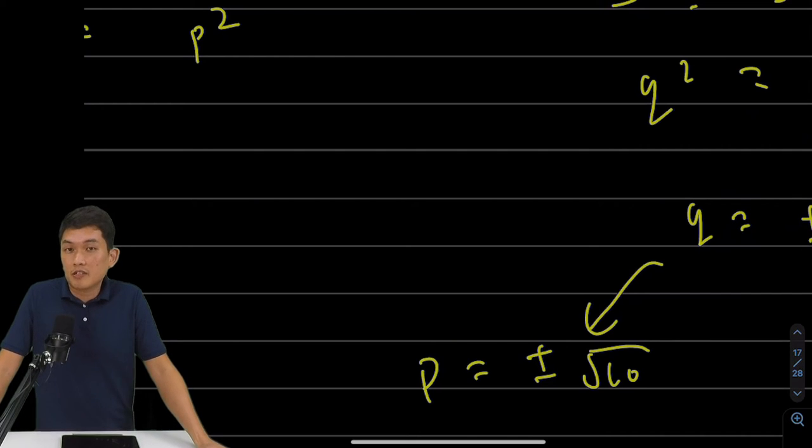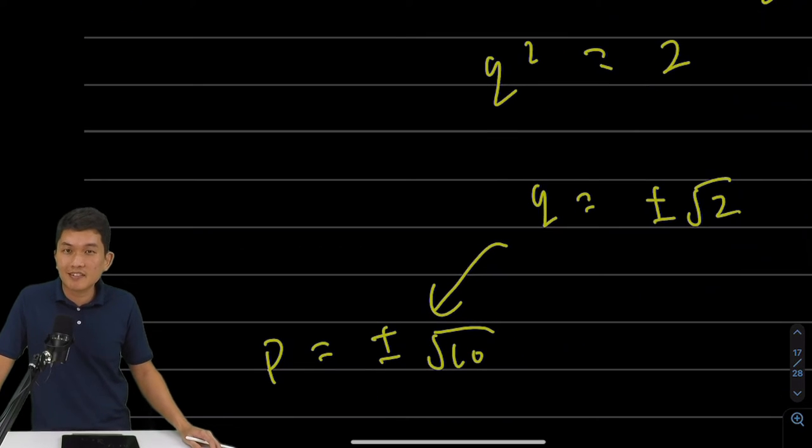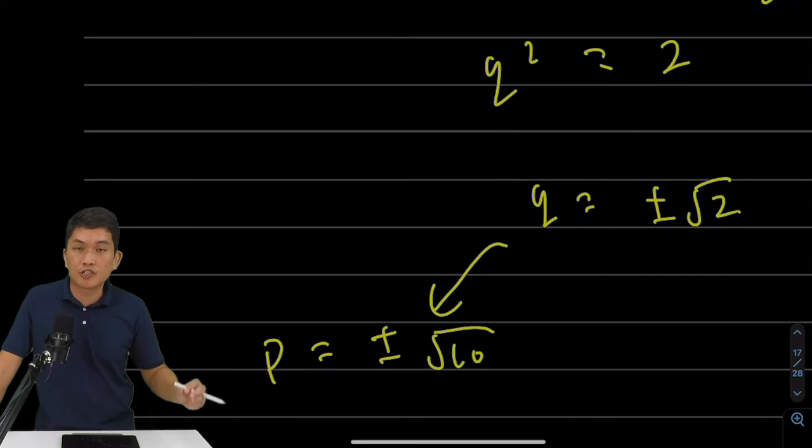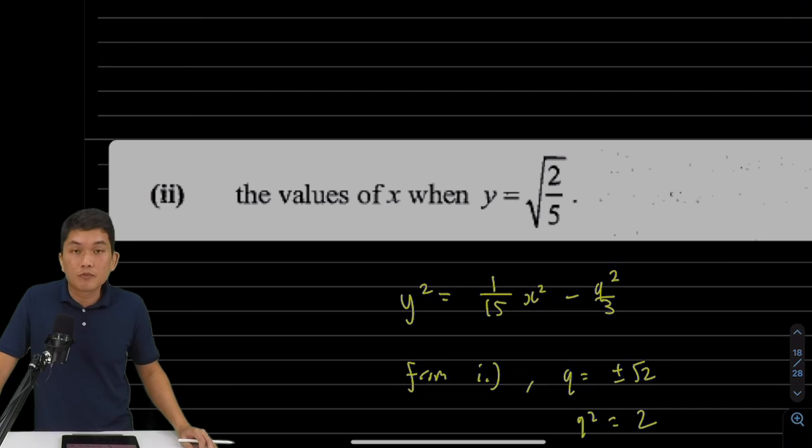q equals to plus minus square root of 2. p equals to plus minus square root of 10. Alright, now let's move on to part 2. Part 2 is just a simple substitution. In part 2, we are being asked the values of x when y equals to square root 2 over 5. And I'm going to use the y-square equals to m x-square plus c-form.